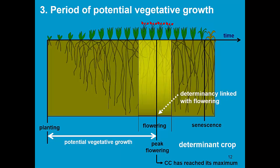The potential vegetative growth is simulated in AquaCrop for determinate crops till the middle of flowering. At that moment, the canopy cover has reached its maximum. So the determinacy is linked with the flowering. During yield formation stage, the canopy cover can no longer increase.